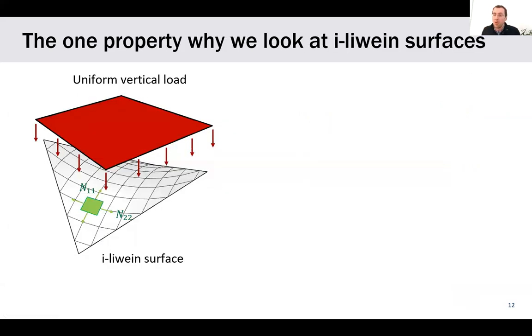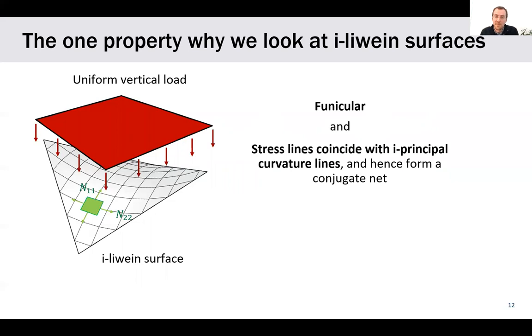Now, the one property why we look at i-Weingarten surfaces is the following result that we were able to prove. If you apply a uniform vertical load to these surfaces, they will be funicular, and the stress lines will coincide with the i-principal curvature lines. That means that, remeshing them by the isotropic principal lines, you get at the same time planar quadrangles and funicular edges, so something that is highly relevant for grid shells.